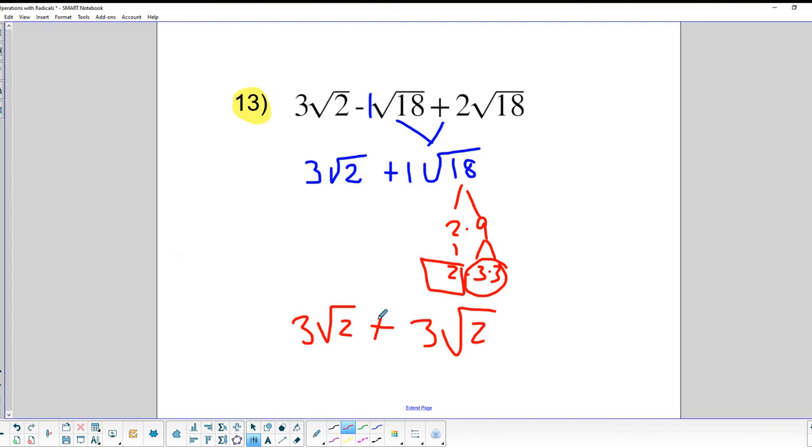And lo and behold, 3 plus 3 times the square root of 2 is going to be a final answer of 6 square roots of 2. These are actually kind of fun if you think about it. So good luck on finishing up today's assignment and any other work that you're given. We'll see you later.